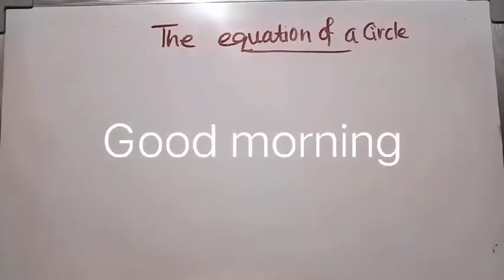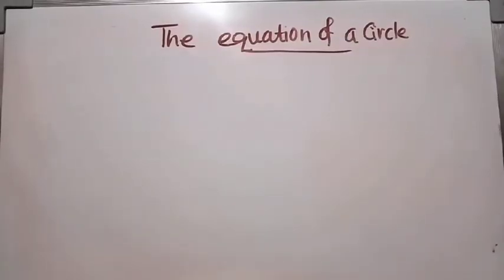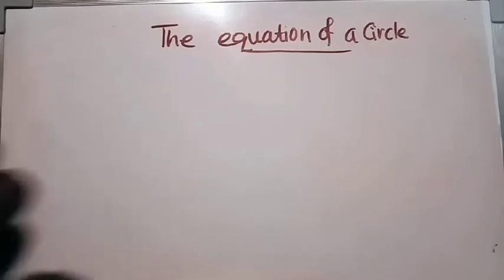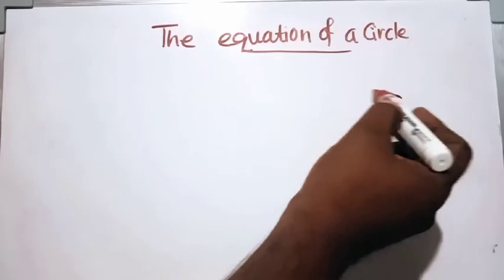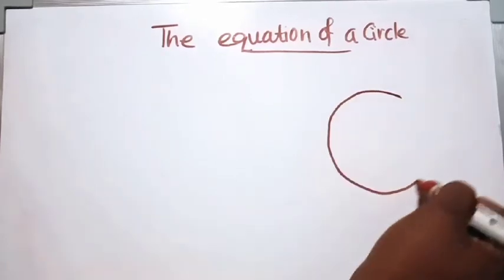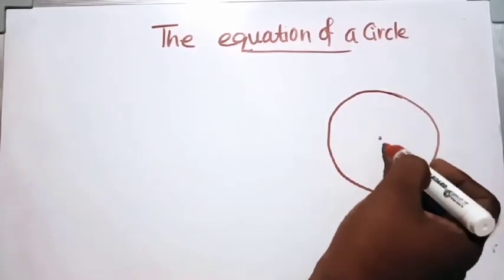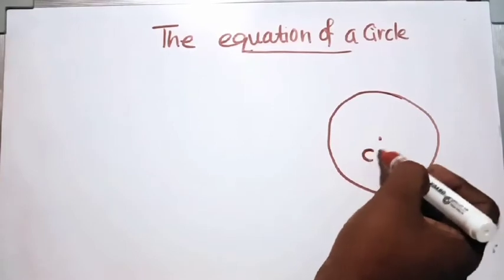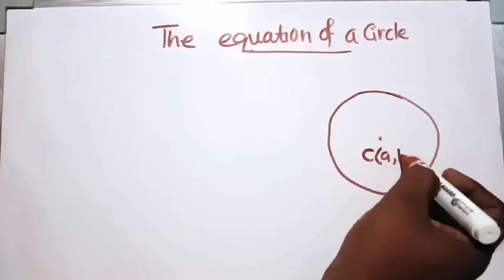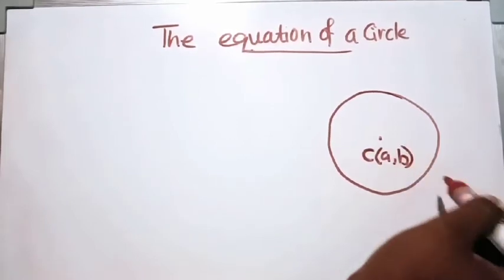Good morning. Today we will discuss the equation of a circle. Let's consider a circle with center C at the ordered pair (a, b).